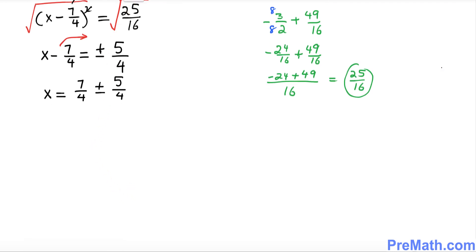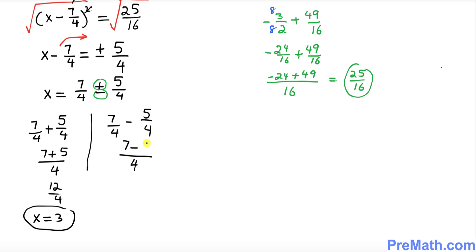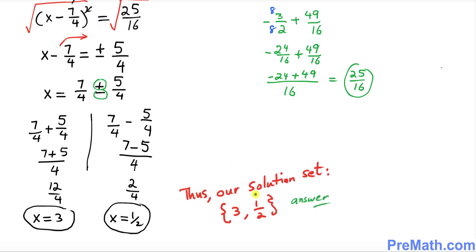Split along the positive and negative signs. With the plus sign: X equals 7 over 4 plus 5 over 4 equals 12 over 4, so X equals 3. With the minus sign: X equals 7 over 4 minus 5 over 4 equals 2 over 4, so X equals 1 over 2. Our solution set is {3, 1/2}.